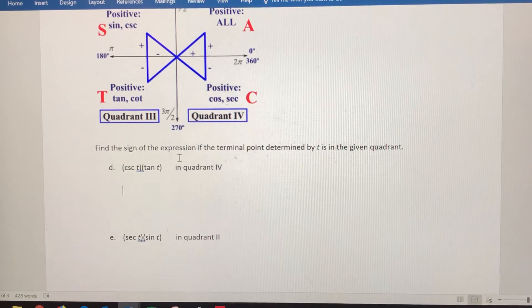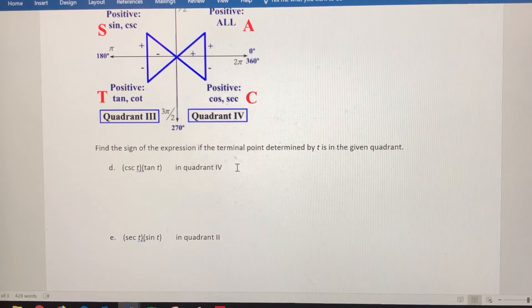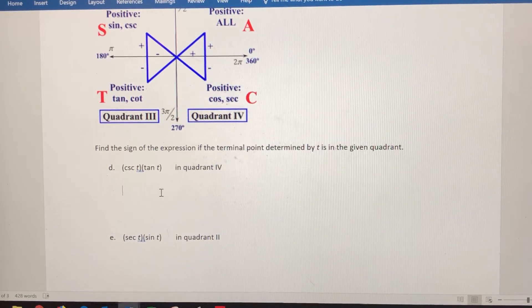We want to find the sign of the expression. In this case, the expression is the product of cosecant of t and tangent of t. We know that t and the terminal point associated with t are in quadrant four.